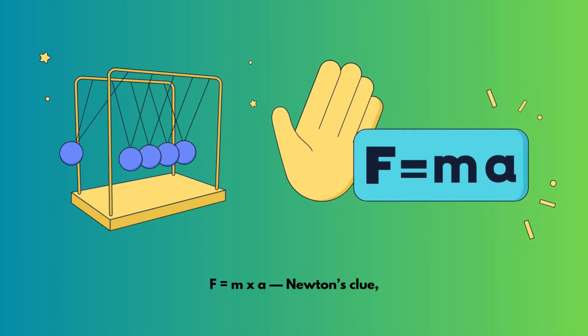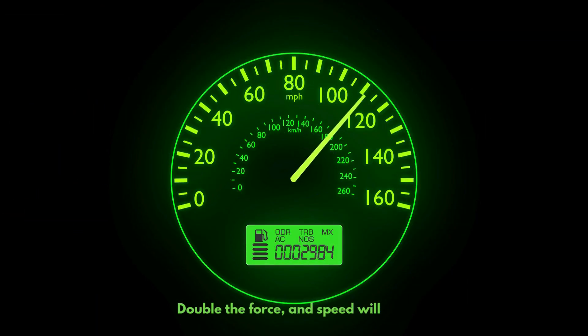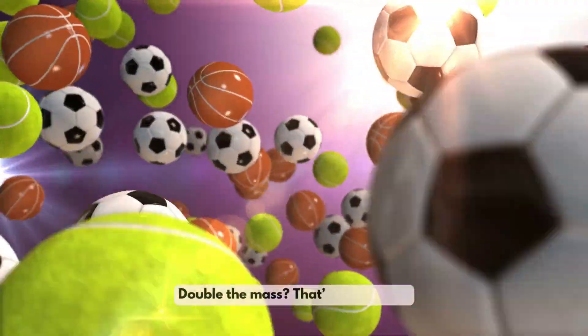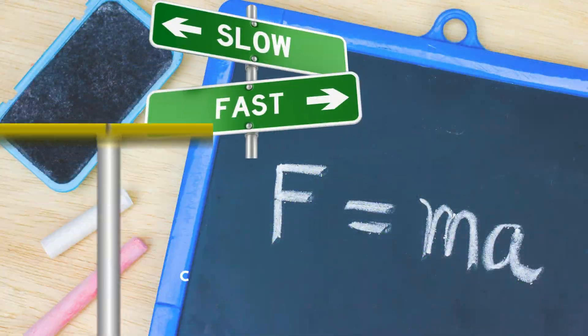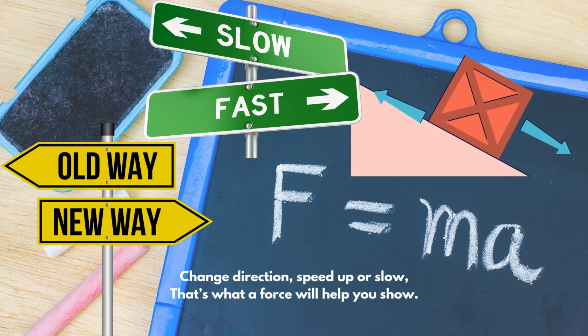F equals ma, that's Newton's clue. Force equals mass times acceleration, too. Double the force, and speed will rise. Double the mass, that's no surprise. Change direction, speed up or slow. That's what a force will help you show.